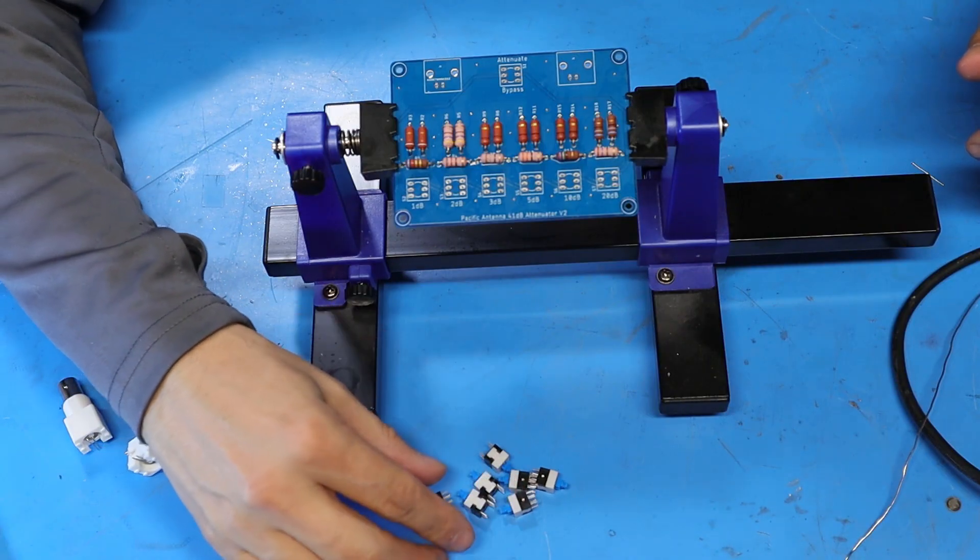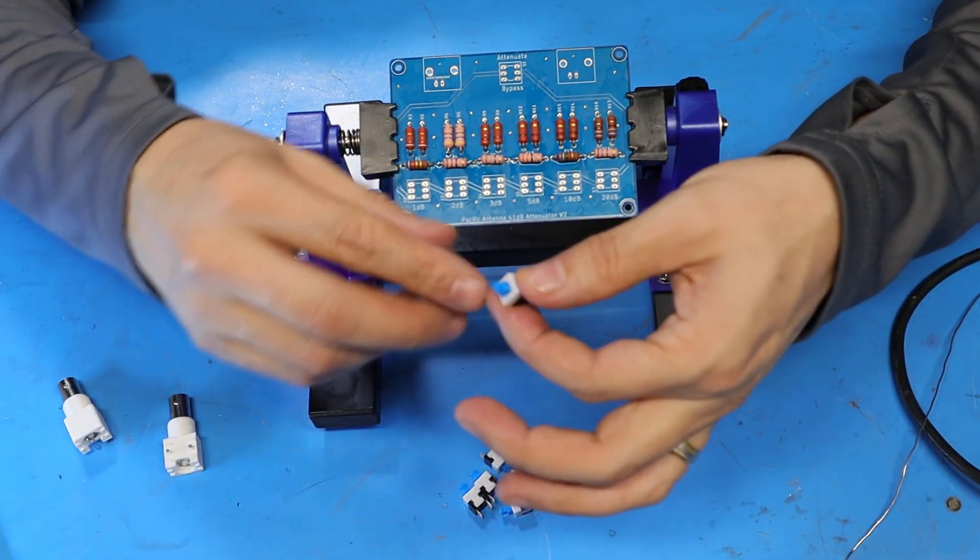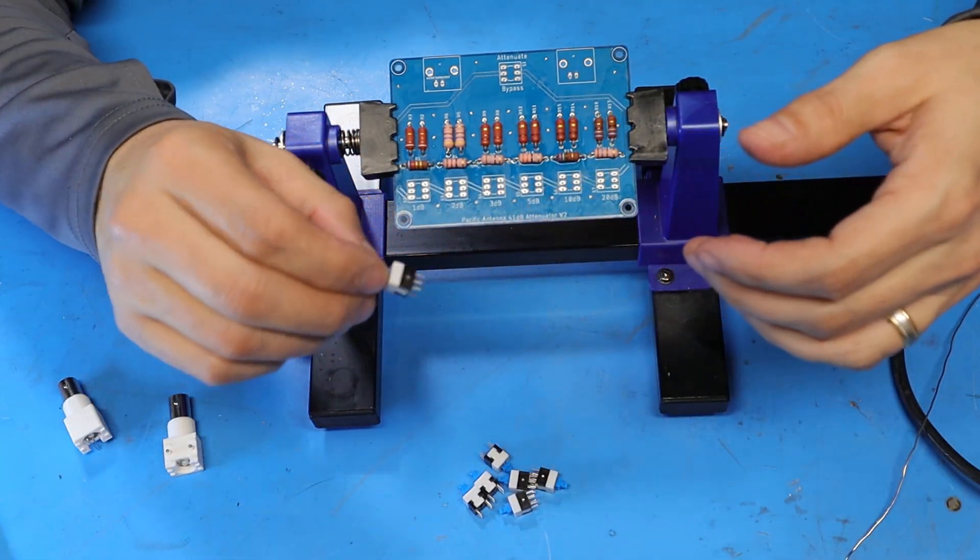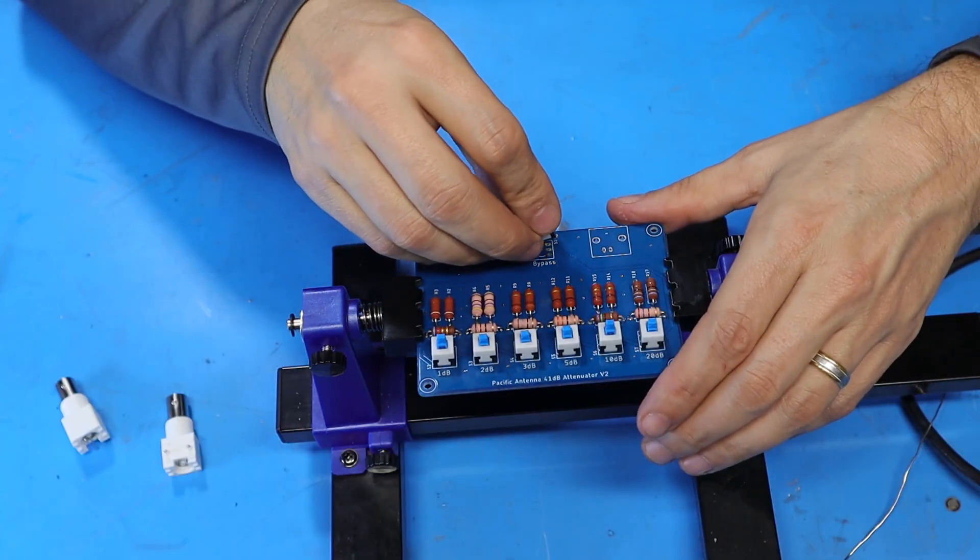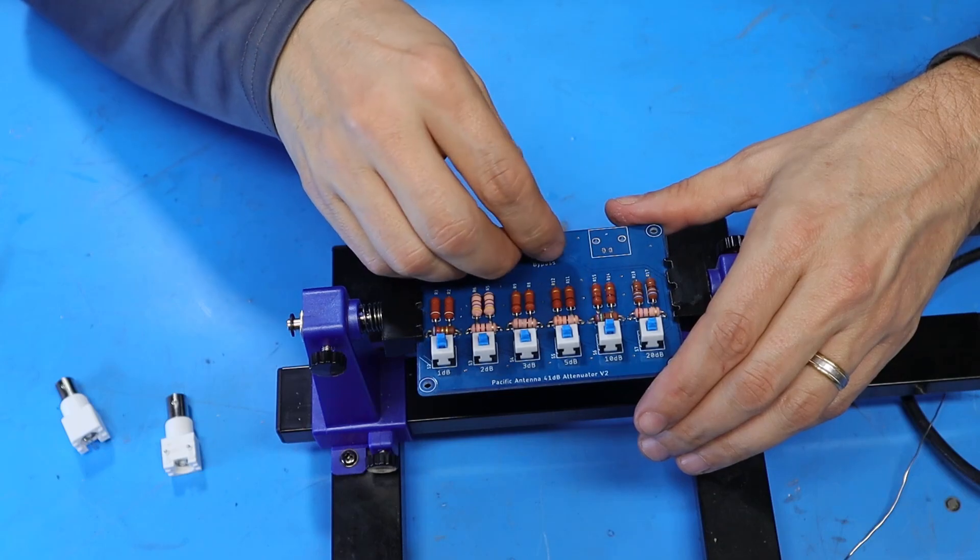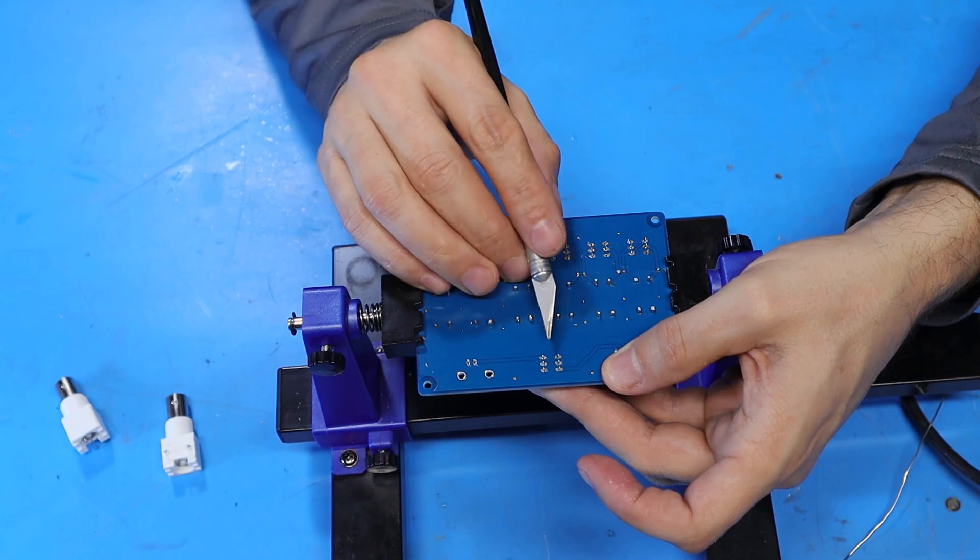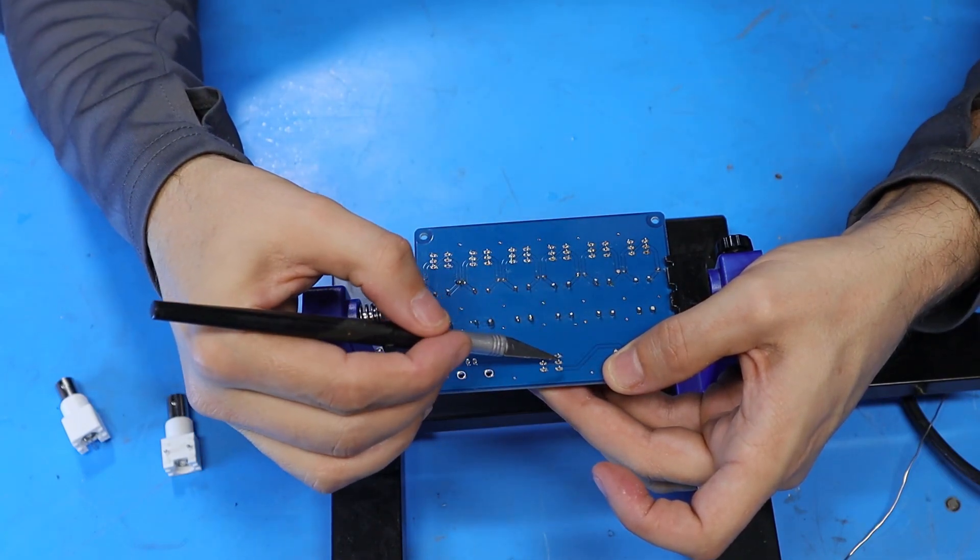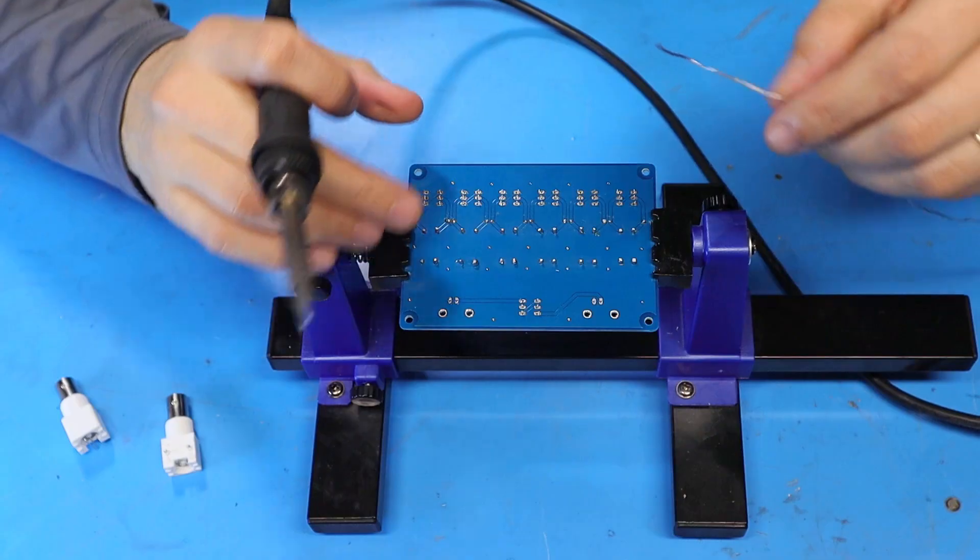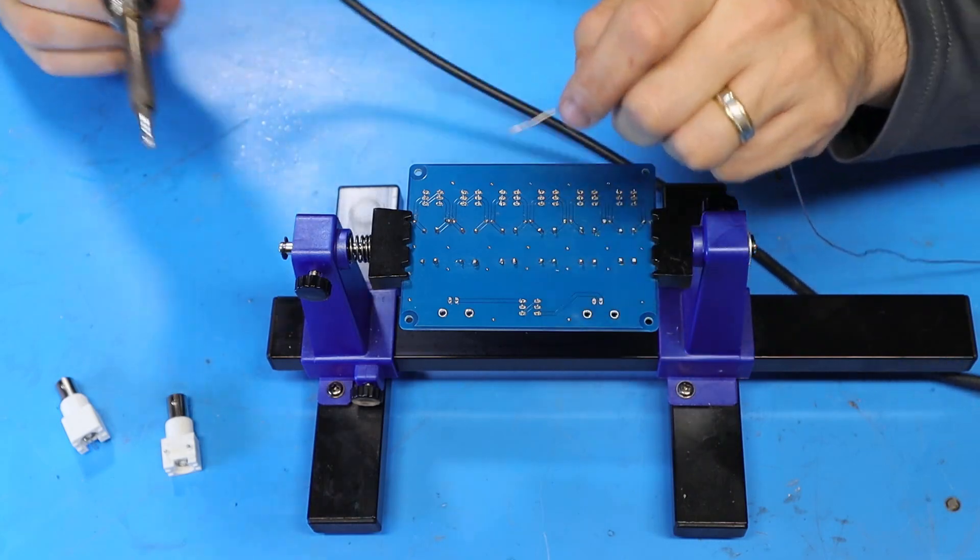Next up I'm going to get these switches mounted and soldered into the board. They all appear to be the same switch and it doesn't look like there's any kind of polarity on these. They can go in either way they fit. So just like I did with the resistors I'm going to mount all of the switches first and then I'm going to flip the board over and bend over the opposite corner leads so the switches stay mounted to the board until I solder the leads. And this time it looks like the holes are plenty big enough so we shouldn't need any flux to solder these in.